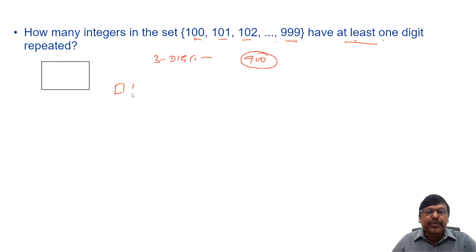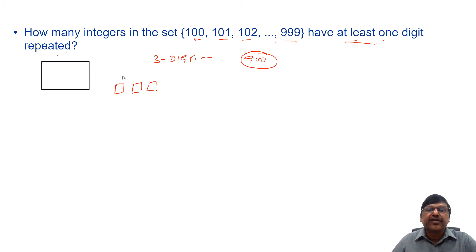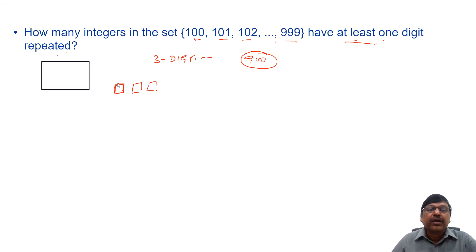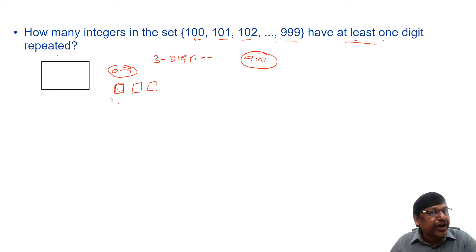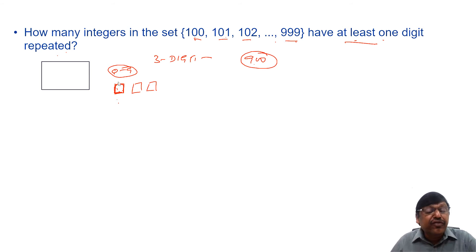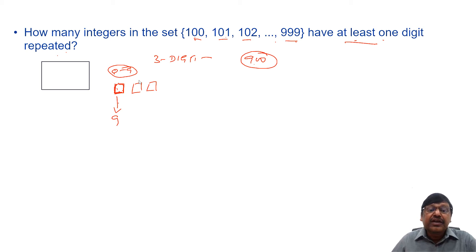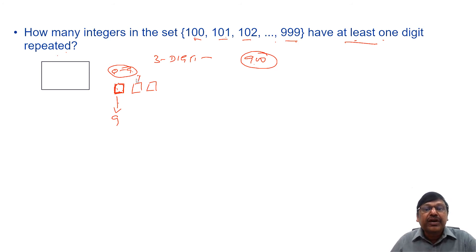If all three digits must be distinct, let's count options for each place. For the hundreds place, we might think there are 10 options (0–9), but the leftmost digit cannot be 0, so there are only 9 options (1–9). For the tens place, there are 10 digits but one has already been used, leaving 9 options.